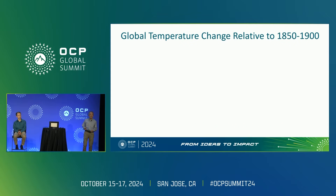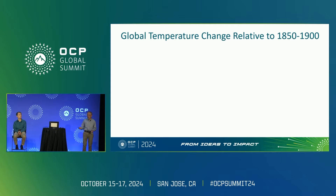What is 1.5 degrees C compared to? It is compared to pre-industrial times — the global temperature change relative to 1850 to 1900. The key thing to remember is that we're comparing against a relative time of increase; that's why it's 1.5 degrees C. For the first 50 to 100 years, we had a rise of approximately 0.25 degrees C — that was the measurement in 1960.